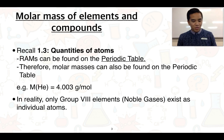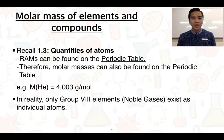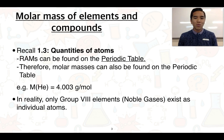We've got another example here as well. The molar mass of helium is 4.003 grams per mole, and its relative atomic mass would also be equal to that number. Just keep in mind that in reality, only group 8 elements — in other words, the noble gases — exist as individual atoms.